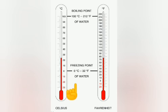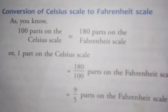So we can say 0 degree centigrade on the Celsius scale corresponds to 32 degree Fahrenheit on the Fahrenheit scale. For conversion of Celsius scale to Fahrenheit scale, we compare both scales: 100 parts of Celsius scale is equal to 180 parts of Fahrenheit scale. Therefore 1 part of Celsius scale is equal to 180/100 parts of Fahrenheit scale. After calculation we get 9/5 parts on the Fahrenheit scale equal to 1 part of Celsius scale.